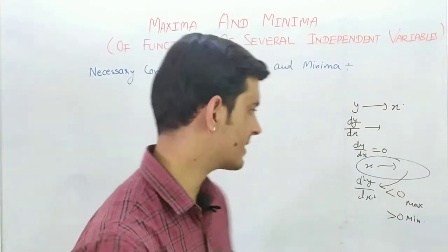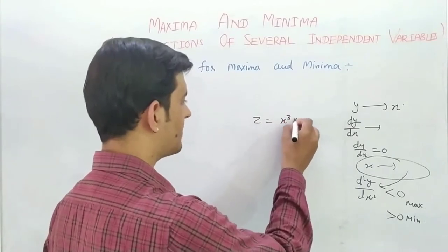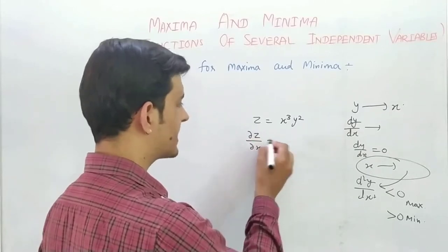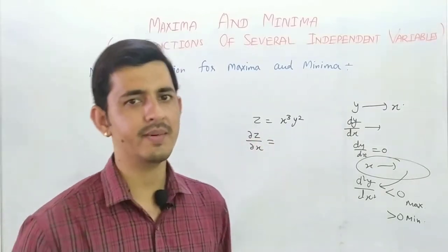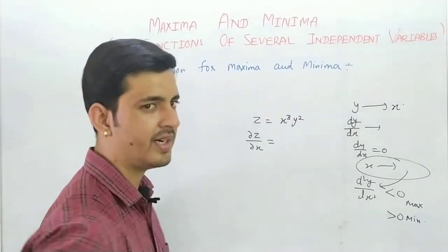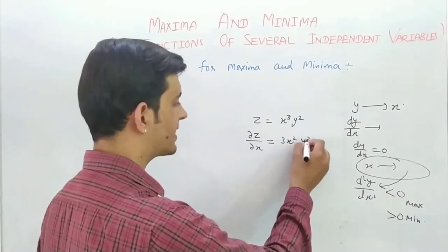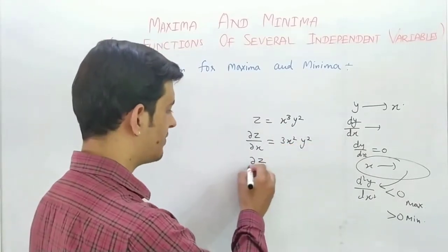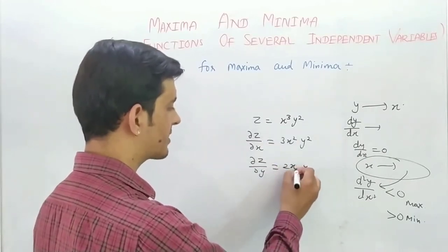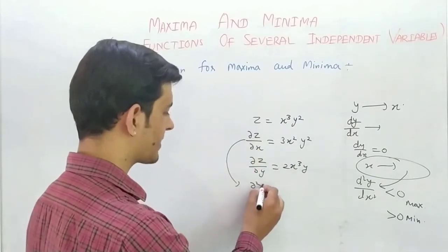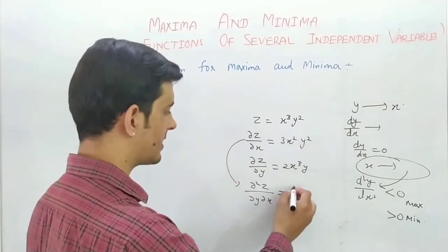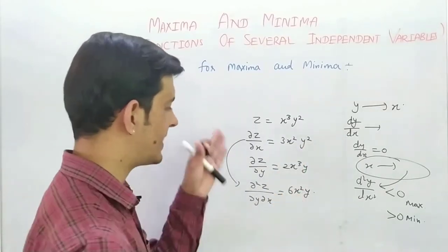Now, partial differentiation: if z is equal to x cube y square, and we do partial differentiation with respect to x, then y square is treated as constant. So the result is 3x squared y squared. If we differentiate with respect to y, then x cube is treated as constant, giving x cube times 2y, which equals 6x squared y. So this is partial differentiation.